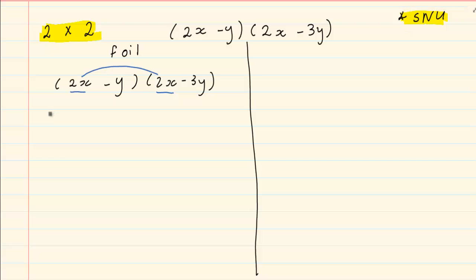So 2 times 2 is 4x squared. Sign is positive, number is 4 and unknowns is x squared.